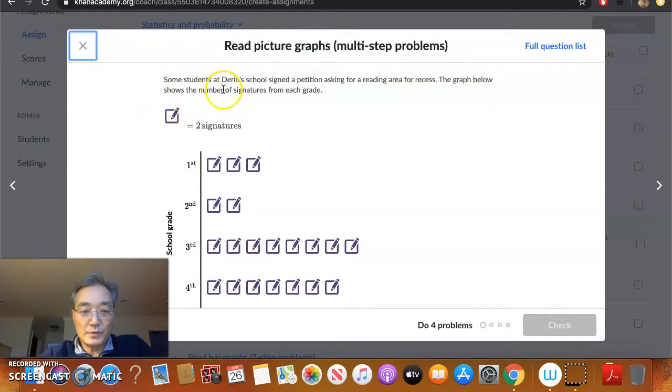It says some students at their school signed a petition asking for a reading area for recess. The graph below shows the number of signatures from each grade. So each of these pictures represents two signatures. So we see that from the first grade, we have three pictures. So that's really three times two is six. There are six signatures.